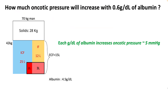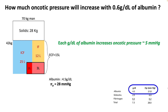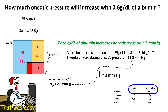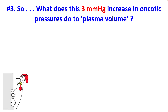So how much will the oncotic pressure increase with a 0.6 g/dL increase in albumin concentration? Each gram per dL of albumin increases your oncotic pressure by 5 mmHg. Your initial plasma oncotic pressure is around 28 mmHg. So at 5.16 g/dL concentration of albumin, the oncotic pressure will be 31.2 mmHg — an increase of 3 mmHg. So after you give 25 grams of albumin, your increase in oncotic pressure is only about 3 mmHg.